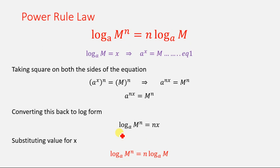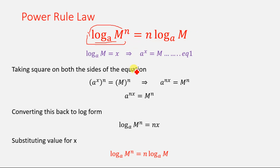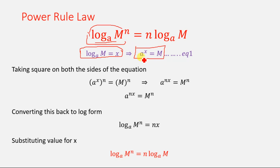The third rule is the power rule law. According to the power rule, log base a of m to the power n equals n times log base a of m. Let's suppose log base a of m equals x. Converting to exponential form gives a to the power x equals m. Taking n as a power on both sides, we get a to the power x, whole power n, equals m to the power n, which simplifies to a to the power nx equals m to the power n.